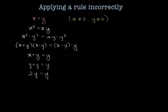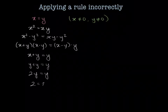Now, the last step is that we can cancel the y's, but we get that 2 is equal to 1.